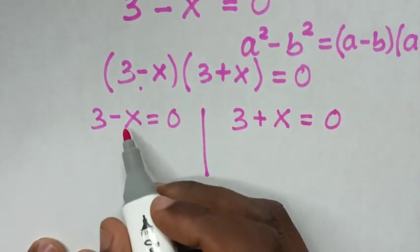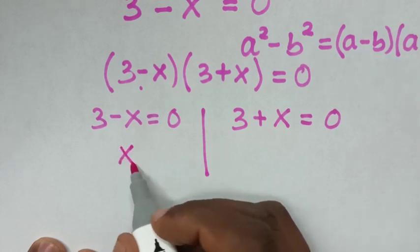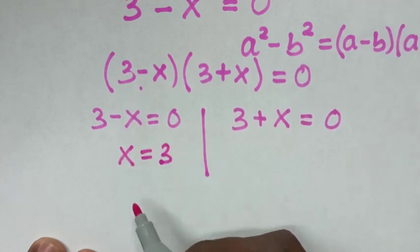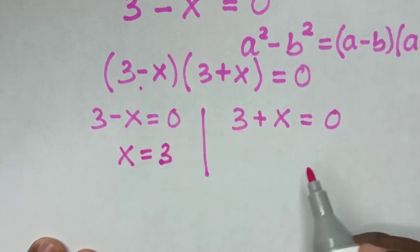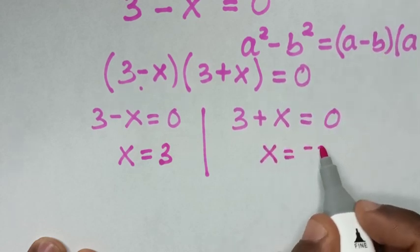From the first solution, we'll take negative x to the right side, so x equals 3. And from here, we'll take 3 to the right side, so x equals negative 3.